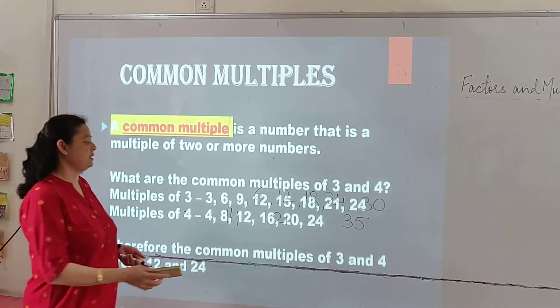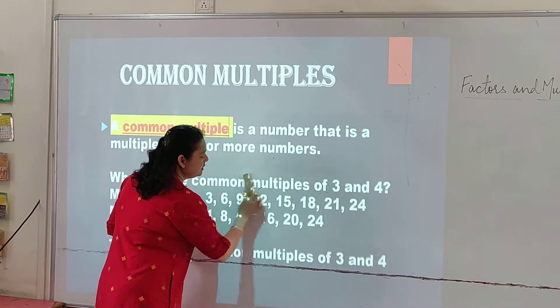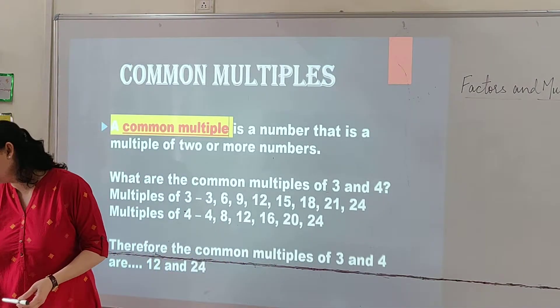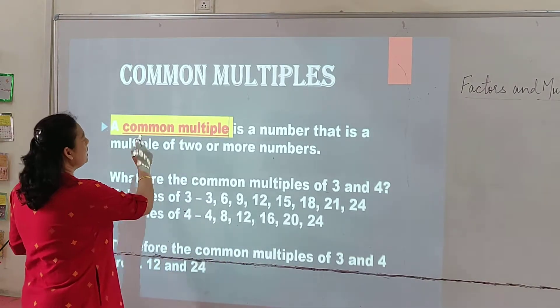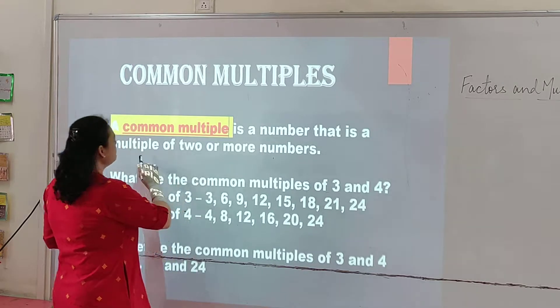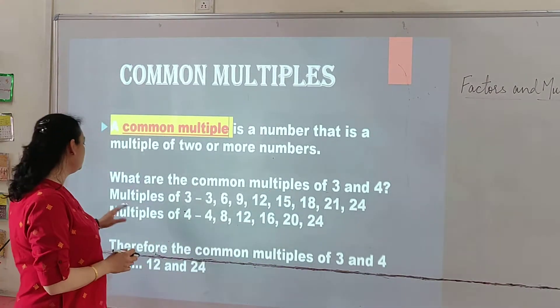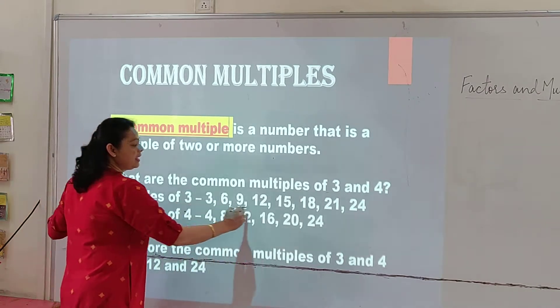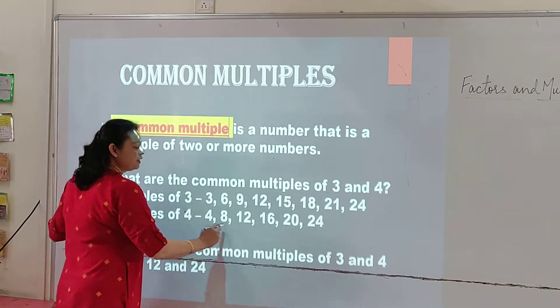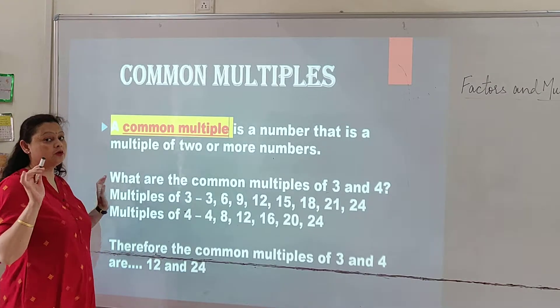Common multiples. Now you know how to find multiples. Now next is we have to find out the common multiples. A common multiple is a number that is multiple of 2 or more numbers. As you can see, the multiples of 3 and 4. Multiples of 3 are written here and the multiples of 4 are here. Now we have to find out the common multiples.